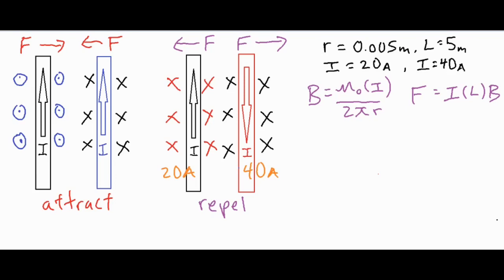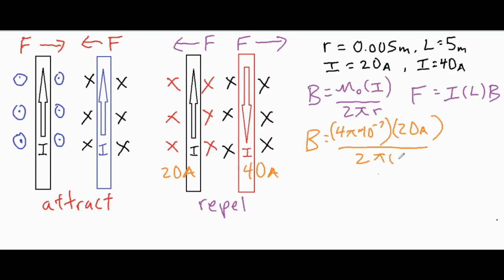We'll pick the 20-amp wire and solve for its magnetic field. B = (4π × 10⁻⁷ × 20) / (2π × 0.005). When we calculate that, the magnetic field strength comes out to 8 × 10⁻³ teslas. That is the strength of the magnetic field that the 40-amp wire is experiencing from the 20-amp wire.